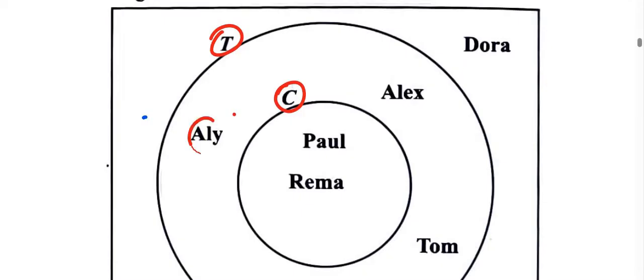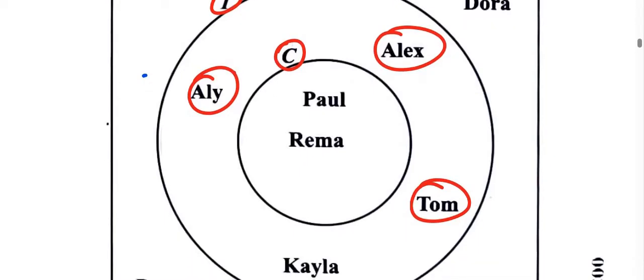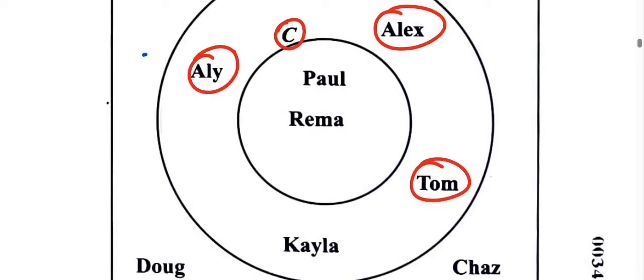Let's count. We have Ali who plays tennis, Alex who plays tennis, Tom who plays tennis. These guys do not play chess. I know that they don't play chess because they're not within the circle of chess.